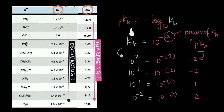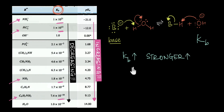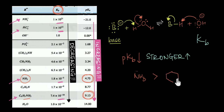Now that we understand what PKB really stands for, how do we predict the strength of a base from PKB values? We said that greater the value of KB, stronger is the base. But a greater KB leads to a lower PKB. So in terms of PKB: lower the value of PKB, stronger will be the base. For example, ammonia has a PKB of 4.75 and aniline has a PKB of 9.13. Since ammonia has a lower PKB, it has a greater KB and is therefore a stronger base compared to aniline.